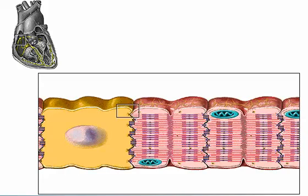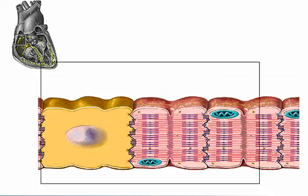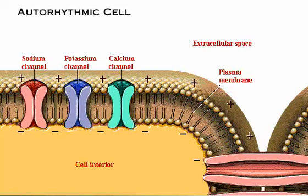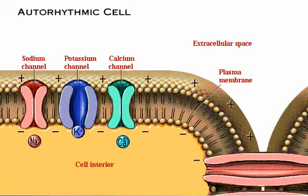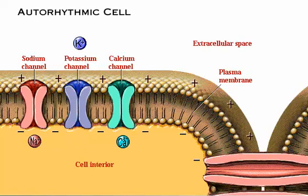Let's explore the structure of an autorhythmic cell. In this diagram, we see the structures that are crucial for generating an action potential. Embedded in the plasma membrane, we see several protein channels that allow ions to move into or out of the cell. Sodium channels and calcium channels allow sodium and calcium to enter the cell, whereas potassium channels allow potassium to leave the cell. The movement of ions affects the membrane potential — the voltage across the membrane.